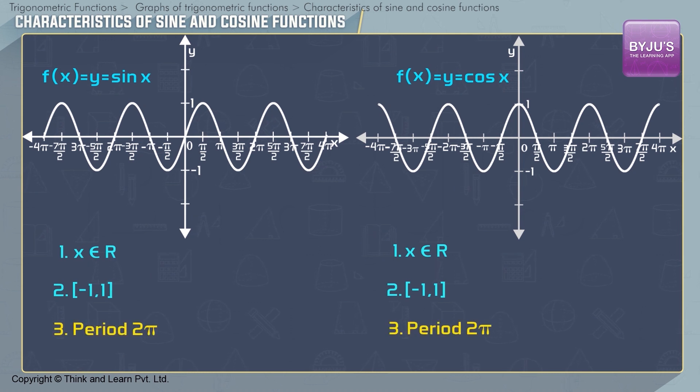Each function is periodic, which means that its graph has a repeating pattern that continues indefinitely. The period of sin x and cos x is 2π, so they repeat after every 2π values of x.